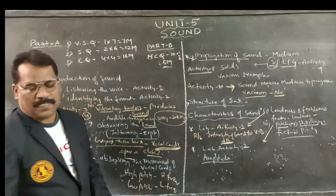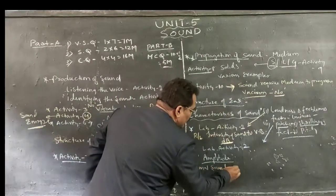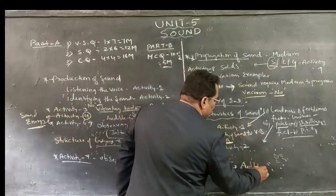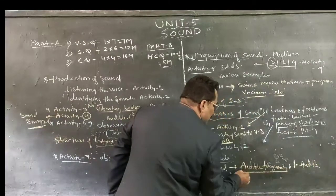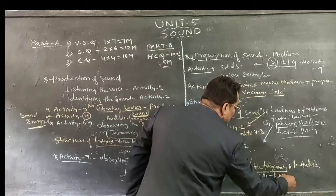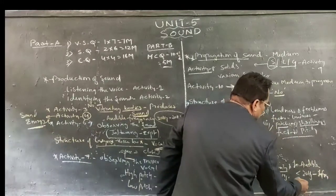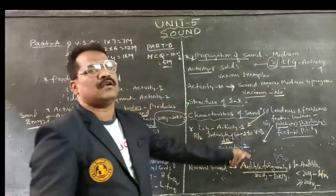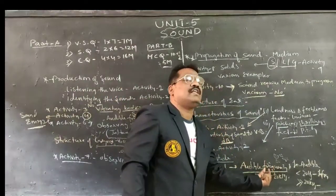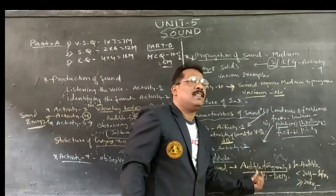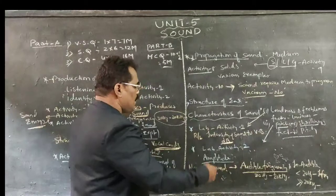After completion of characteristics, one more topic is normal sound. The audible frequency range is from 20 Hz to 20 kHz. For frequencies less than 20 Hz, the sound produced is called infrasonic. For frequencies greater than 20 kHz, those sounds are called ultrasonic. By studying audible and inaudible frequency, we can clearly understand what frequency range normal human beings can hear.